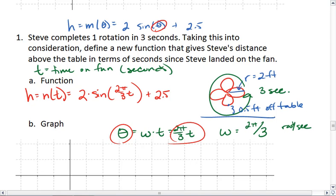Basically, what's happening in our function is when we plug in time, we multiply by the angular speed and that tells us what angle Steve has swept out. That number goes into our sine function and it tells us Steve's vertical height in radii.